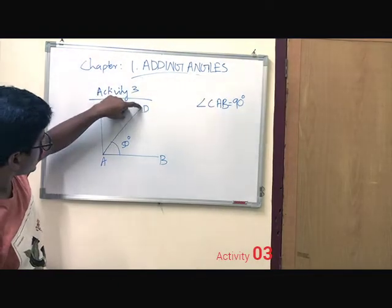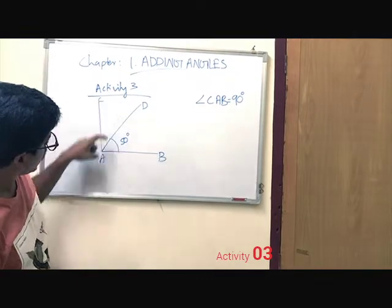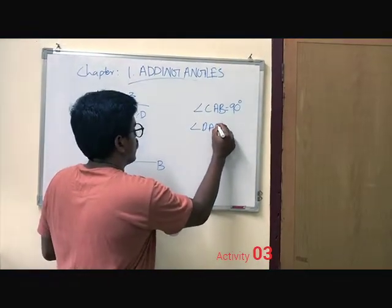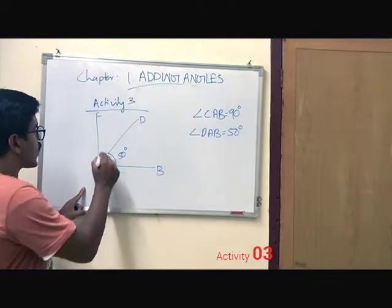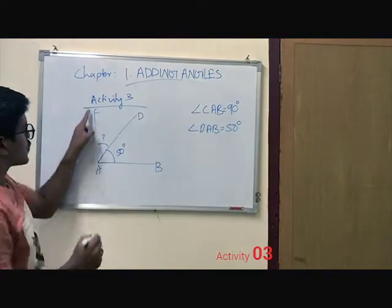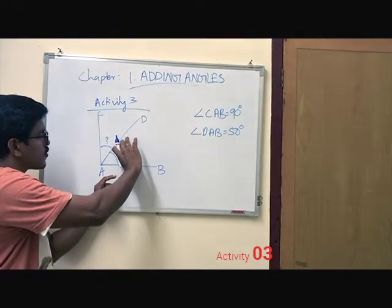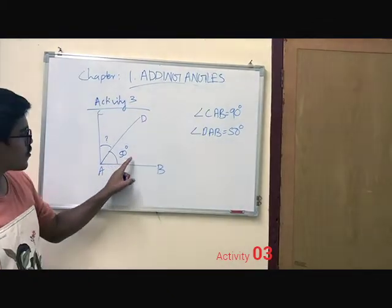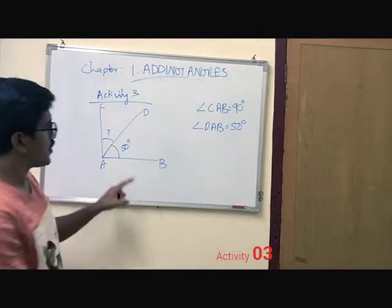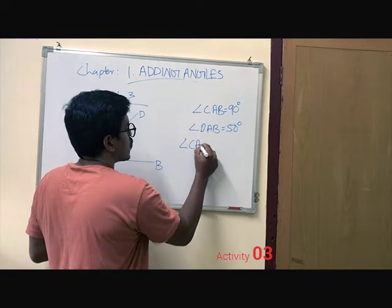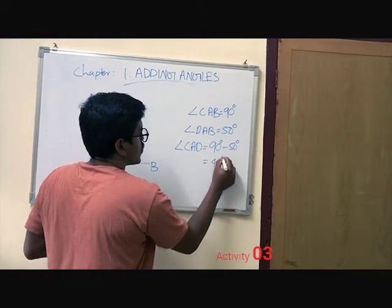It is already written here: angle D, A, V equals 50 degrees. Then one more angle we have to find out is angle C, A, V. The entire angle is 90 degrees and this portion is 50 degrees, so we can subtract 50 from 90. Then angle C, A, V equals 90 degrees minus 50, that is equal to 40 degrees.